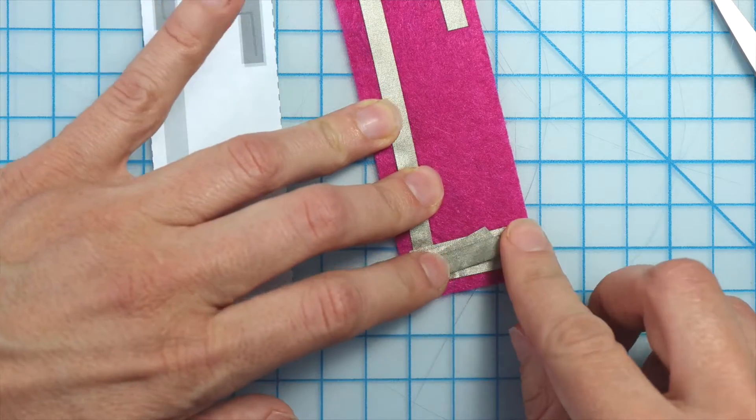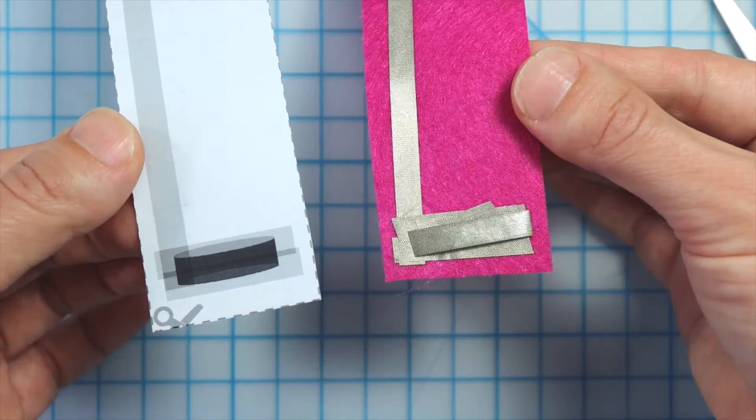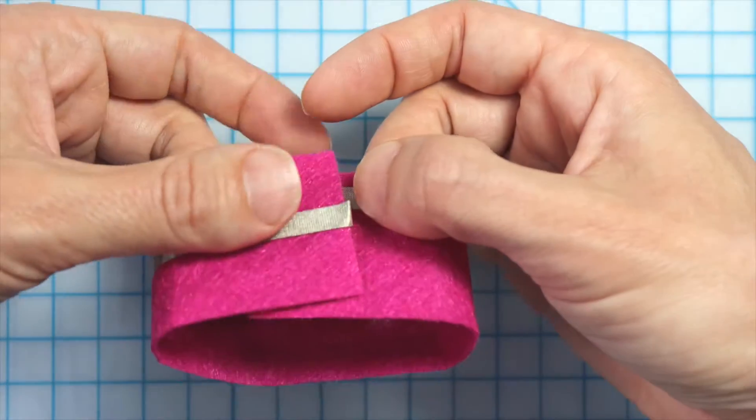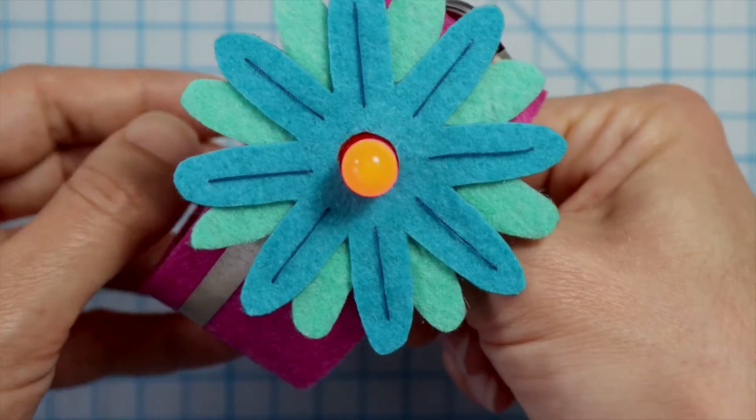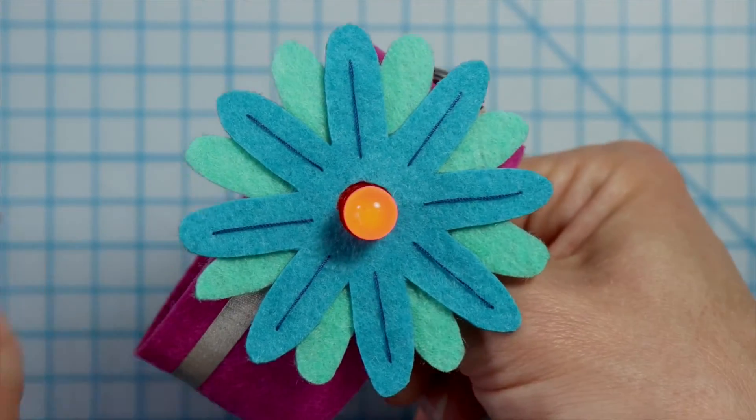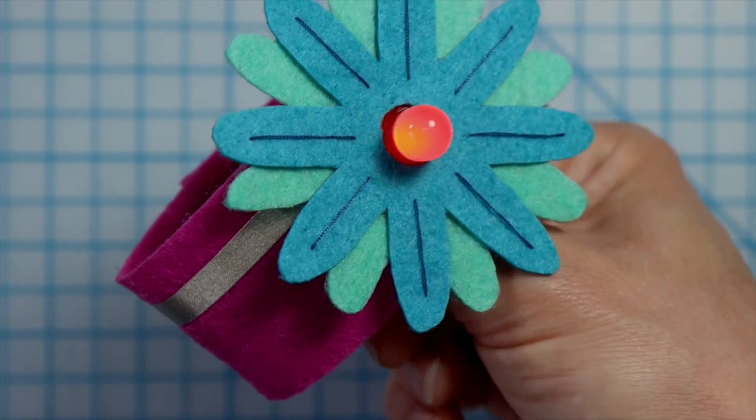Secure the LED in place by laying another piece of maker tape over each of the LED's legs. Add a loop of maker tape on top of the horizontal pieces at the bottom to create a closure for the bracelet. Create a bracelet design using the flower template and glue or tape it over the LED or create your own design.